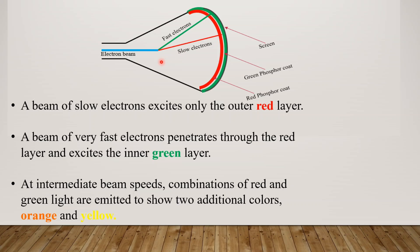We use slow electrons. A beam of slow electrons excites only the outer red layer. The slow electrons come and strike the outer red layer. The energy is confined to that layer, so it emits red color light and not green light.